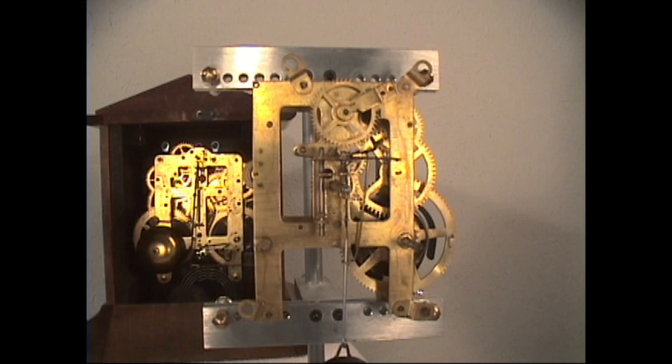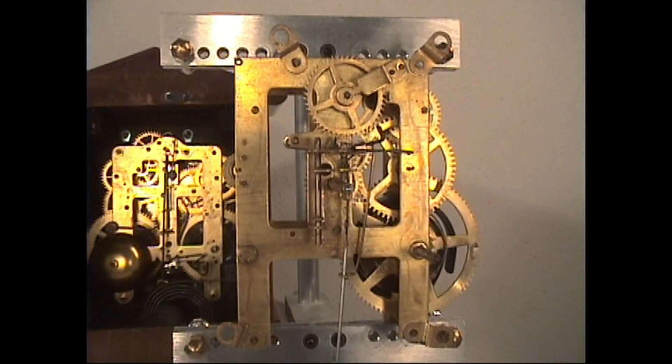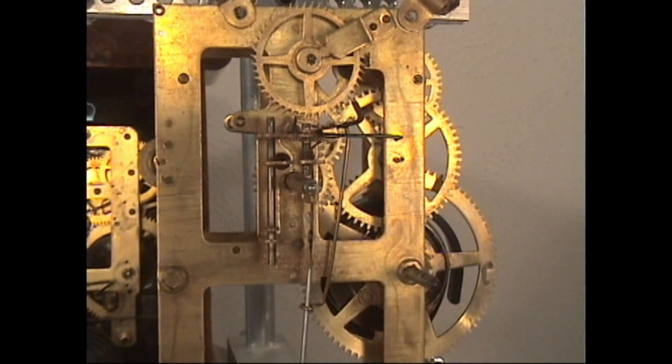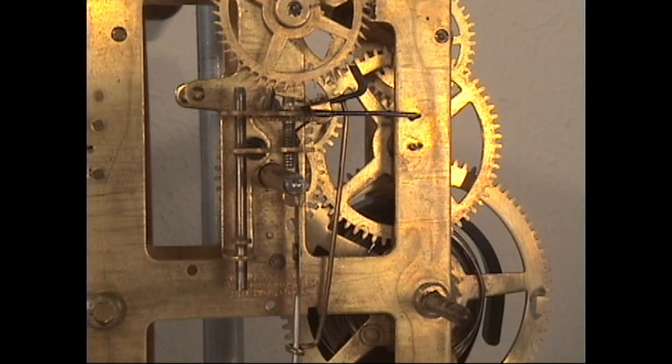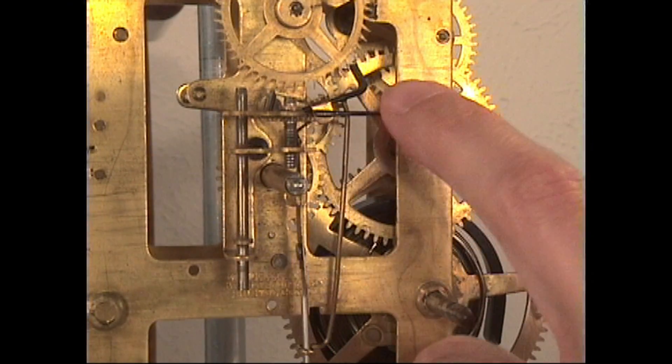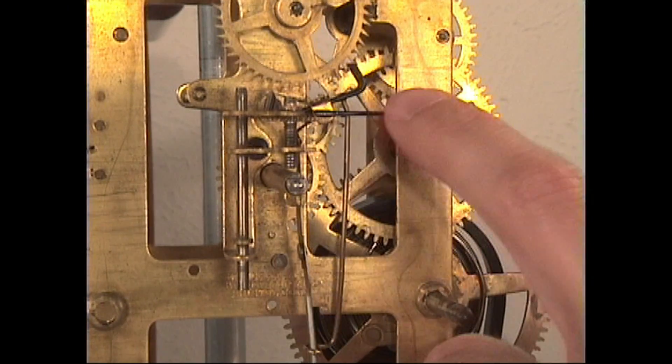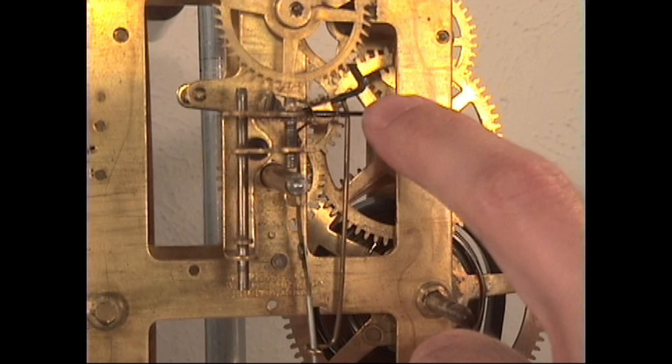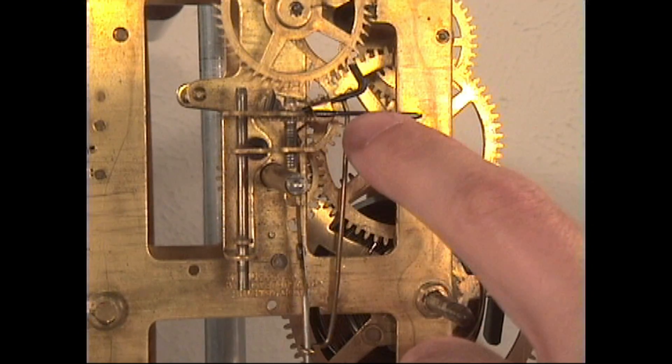And the strip pallet here, let's take a close up look at this. This strip pallet that is bent into shape is called the verge. Now the verge on the half deadbeat and the recoil escapement are shaped differently.